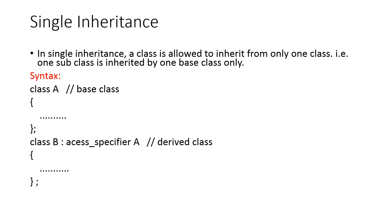As in the last class, we have seen that for single inheritance, from one base class, only one derived class will be present. In single inheritance, a class is allowed to inherit from only one class. The syntax is class A — this is the base class name — and class B is the derived class name. That is, from class A, class B has been derived.